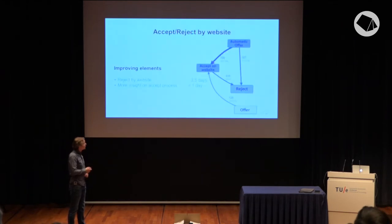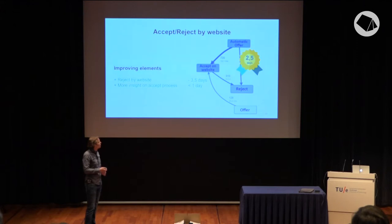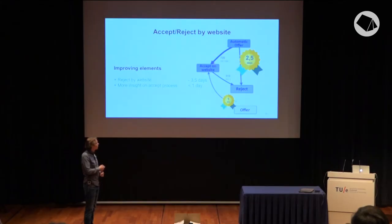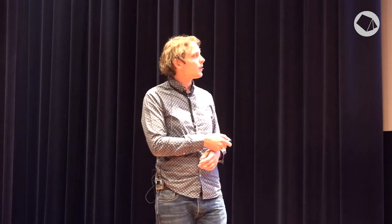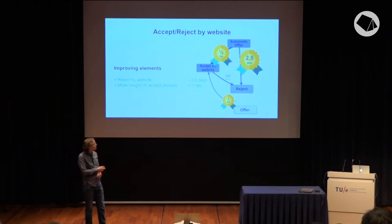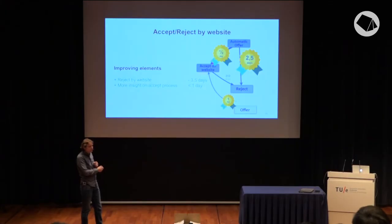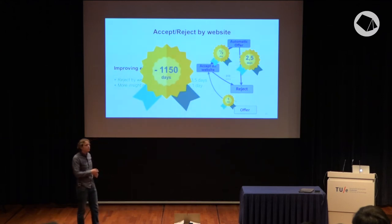With the accept and reject by website, instead of waiting six days to reject a property, it now takes two and a half days — three and a half days faster. We also see that when the home seeker gets an offer they're happy with and want to accept, they do it quite fast — within one day. With the automatic offer, it's almost half a day to accept. Because of the rejection part being three and a half days faster, over six months we have made the process 1,150 days faster than before.